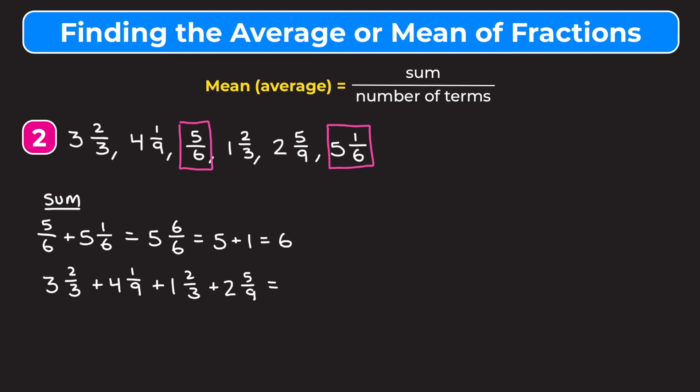So I'm going to keep them as mixed numbers. And I'm going to change all of their denominators to be nine, because that's the least common denominator between three and nine. So three and two thirds is going to become three and six ninths. Four and one ninth can stay as it is. One and two thirds becomes one and six ninths. And two and five ninths can stay as it is.